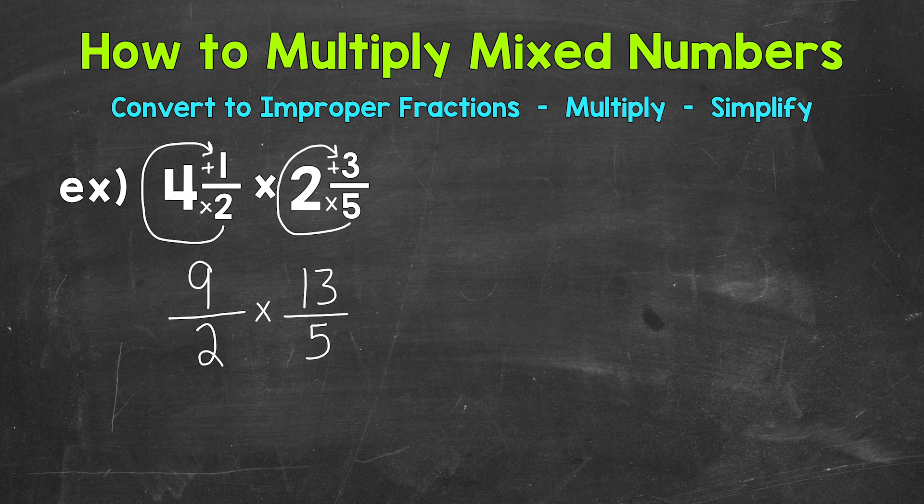Once we have our mixed numbers converted to improper fractions, we can multiply straight across. So numerator times numerator and denominator times denominator. Let's start with the numerators. So nine times 13, that gives us 117. And then two times five gives us 10. So that's our answer as an improper fraction. 117 tenths.